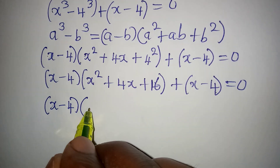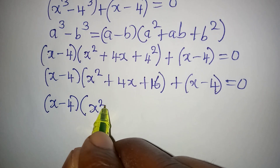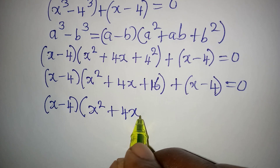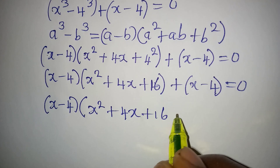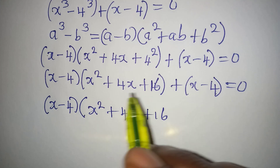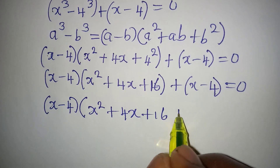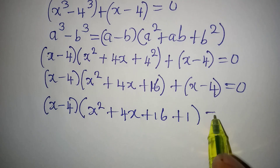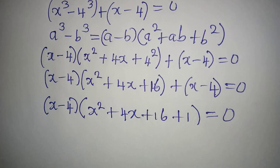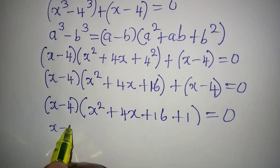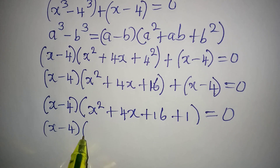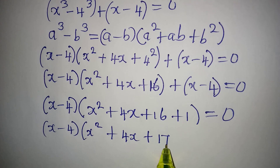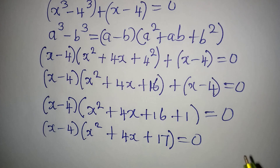Factoring out x minus 4, inside we have x squared plus 4x plus 16, and then since the whole of the second bracket has come out, 1 will be there, so we have plus 1. Closing this and equating to 0, we get x minus 4 times x squared plus 4x plus 17 equals 0.